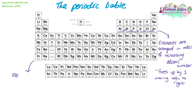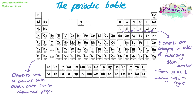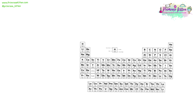Elements that are in the same vertical column all have similar chemical properties to each other. For example, in this highlighted vertical column they're all low density, highly reactive metals. We can annotate the periodic table to give us more information about how to read it — the horizontal rows and the vertical columns.